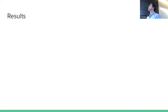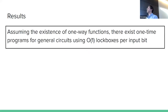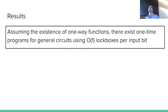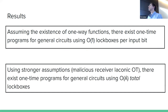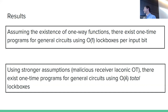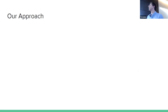Here are our main results. First, we show you can build one-time programs from counter lockboxes, and the number of lockboxes per input bit of the circuit asymptotically matches the previous result — only a constant number of lockboxes per input wire. Second, with stronger assumptions — specifically a malicious-receiver laconic OT built using laconic OT and SNARKs — we can create one-time programs where the number of lockboxes depends only on the security parameter, not the input length. I only have time to cover the first result.